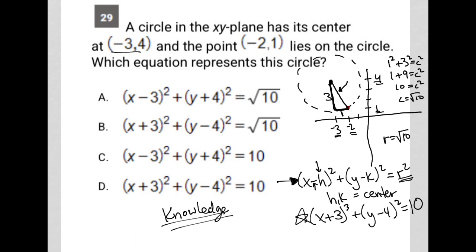So the correct answer here would be choice D: (x + 3)² + (y - 4)² = 10. The (x + 3) and (y - 4) we were given from the center, equals 10 we had to find.